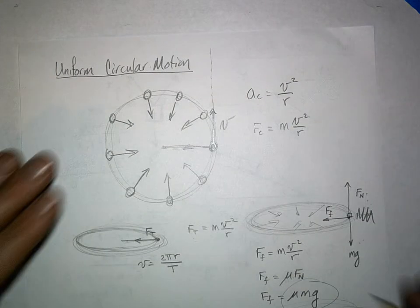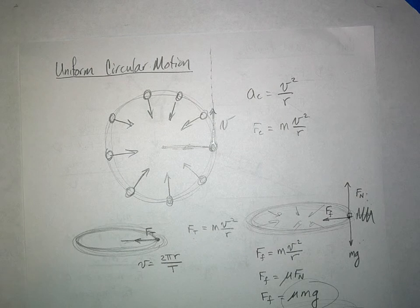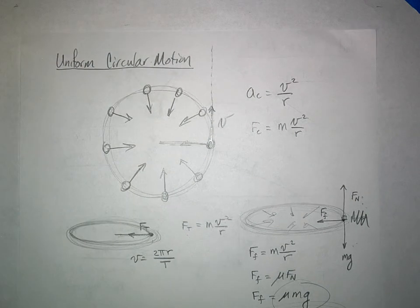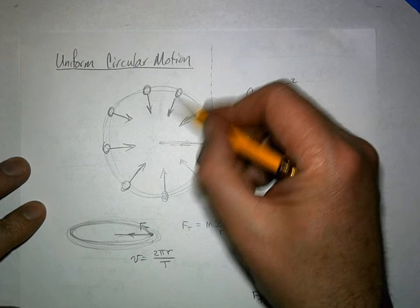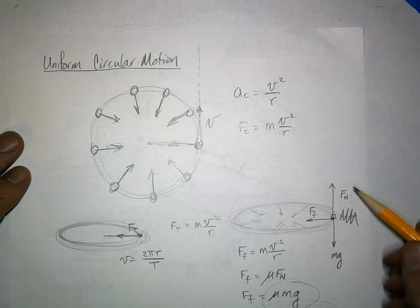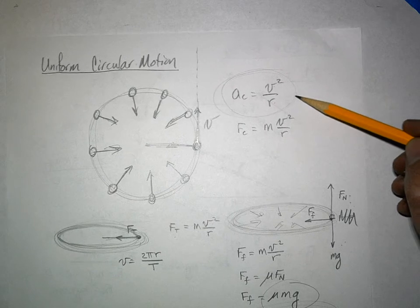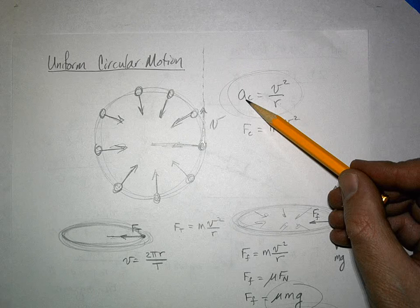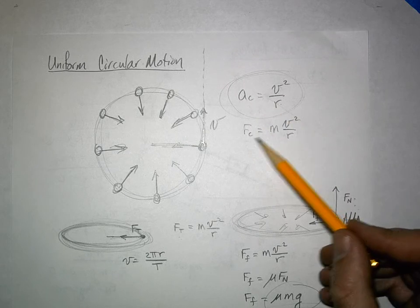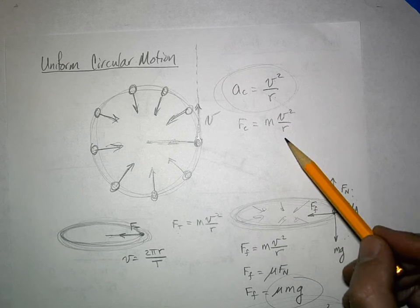Changing the direction of velocity requires acceleration. We call the acceleration that makes velocity go around in a circle centripetal acceleration — it's what you feel when you make a turn in a car. The magnitude of centripetal acceleration is v-squared over r. This means you need a centripetal force: F equals m times centripetal acceleration, or mv-squared over r.